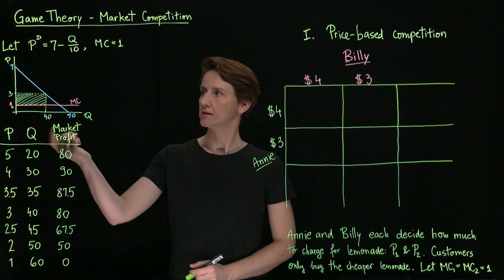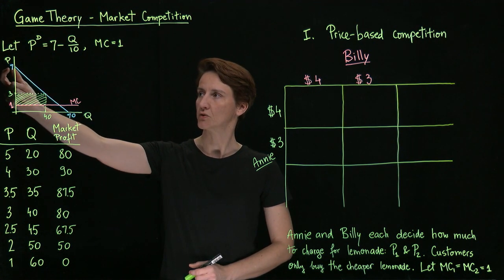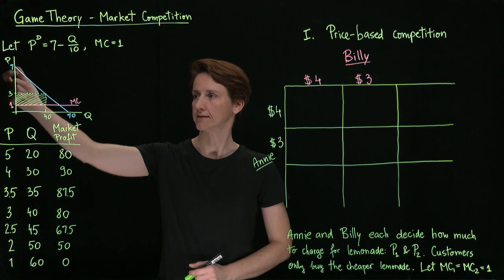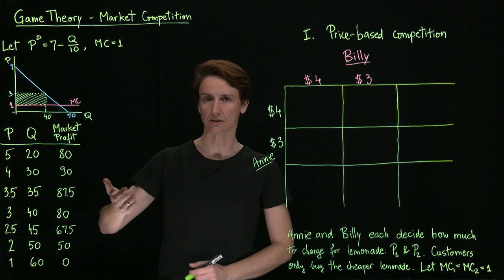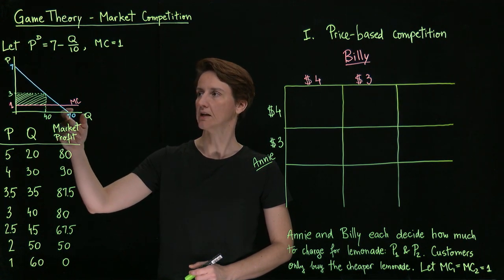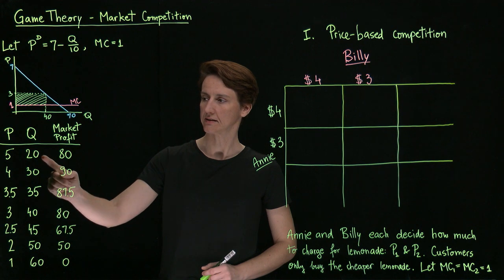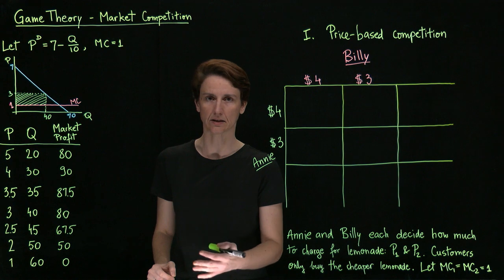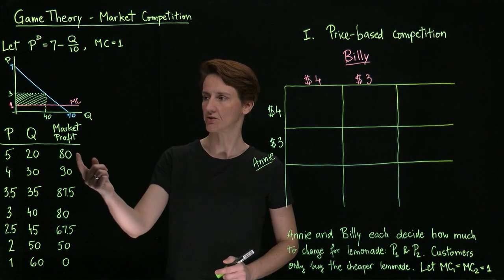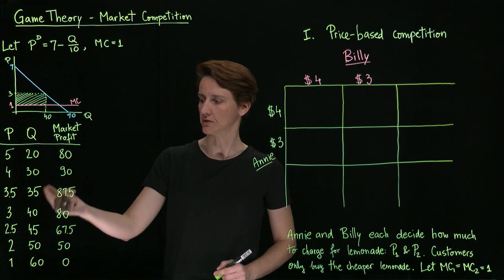We'll assume that demand in this market is given by a linear function, so that the most anyone is willing to pay is $7 a glass, and if price was zero, 70 glasses would be consumed. I've written here a schedule that shows us at different prices what quantities are sold in this market, and assuming that marginal cost is constant at $1 for any sellers in the market, how much will be total market profit?